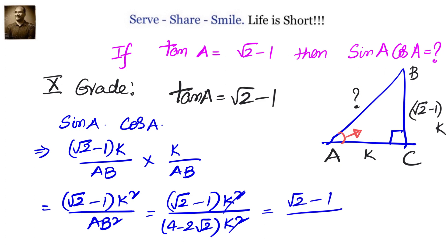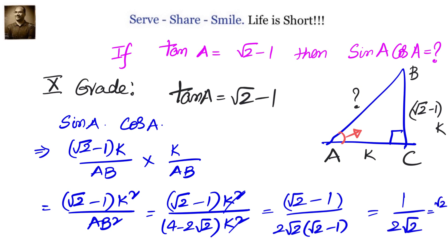Left out is root 2 minus 1 divided by 4 minus 2 root 2. From 4 minus 2 root 2, we take 2 root 2 common, giving 2 root 2 into root 2 minus 1. The root 2 minus 1 terms cancel, leaving 1 by 2 root 2, which can also be written as root 2 by 4 in rationalized form. So if tan A equals root 2 minus 1, then sin A cos A equals 1 by 2 root 2, or square root of 2 divided by 4.